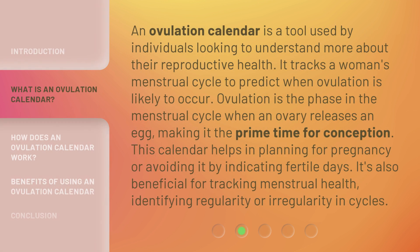An ovulation calendar is a tool used by individuals looking to understand more about their reproductive health. It tracks a woman's menstrual cycle to predict when ovulation is likely to occur. Ovulation is the phase in the menstrual cycle when an ovary releases an egg, making it the prime time for conception. This calendar helps in planning for pregnancy or avoiding it by indicating fertile days, and is also beneficial for tracking menstrual health, identifying regularity or irregularity in cycles.